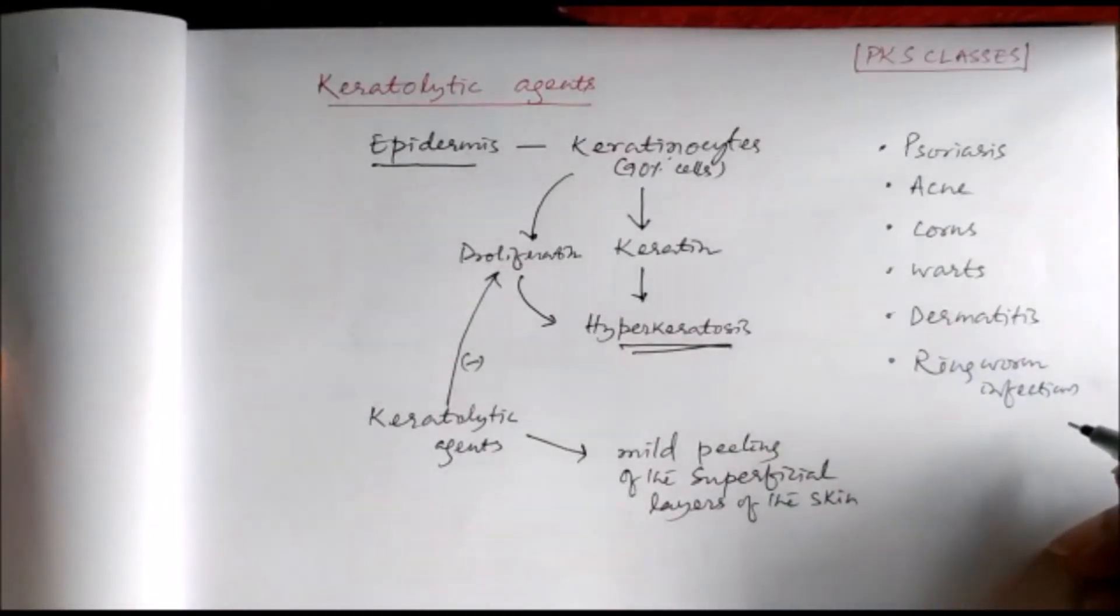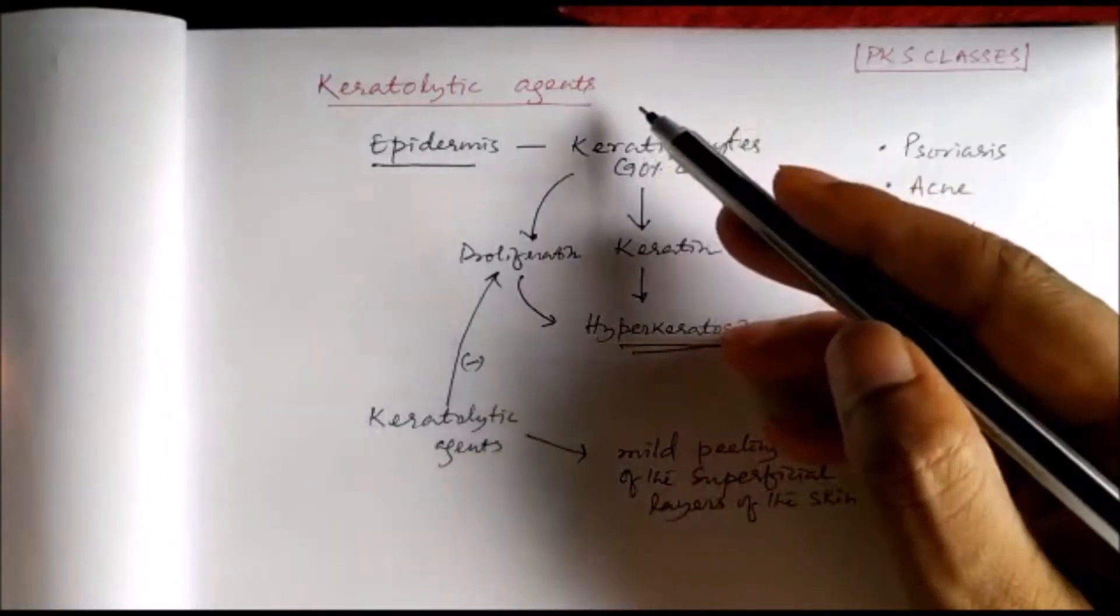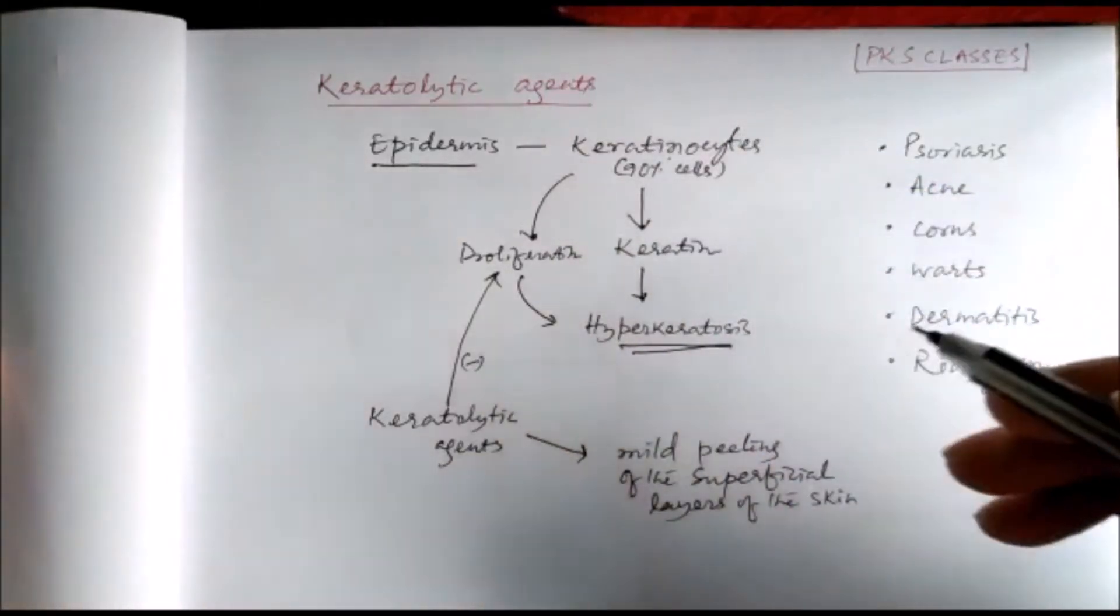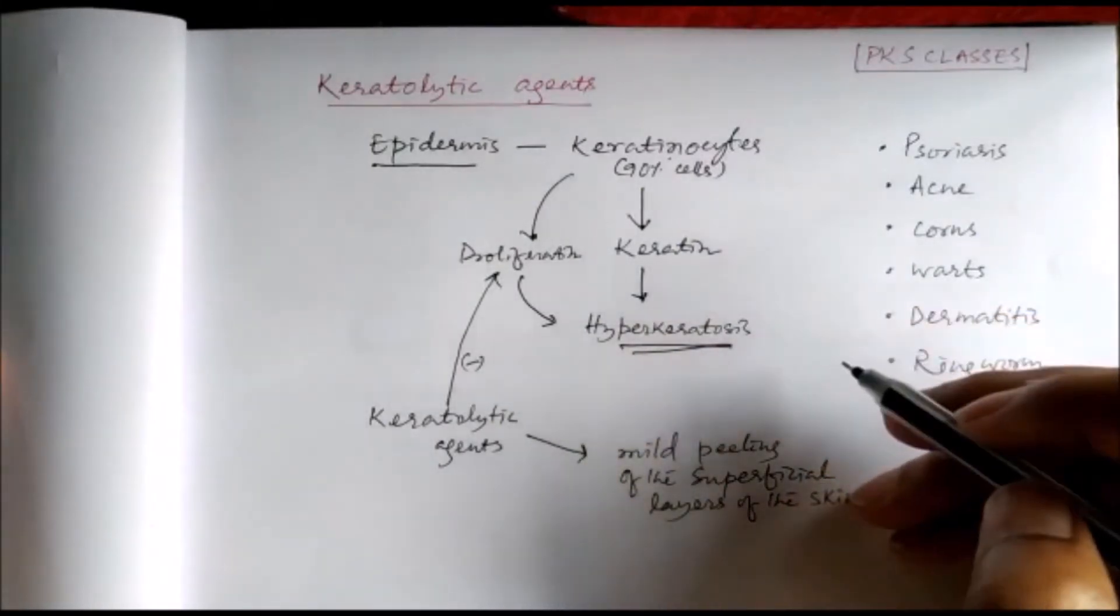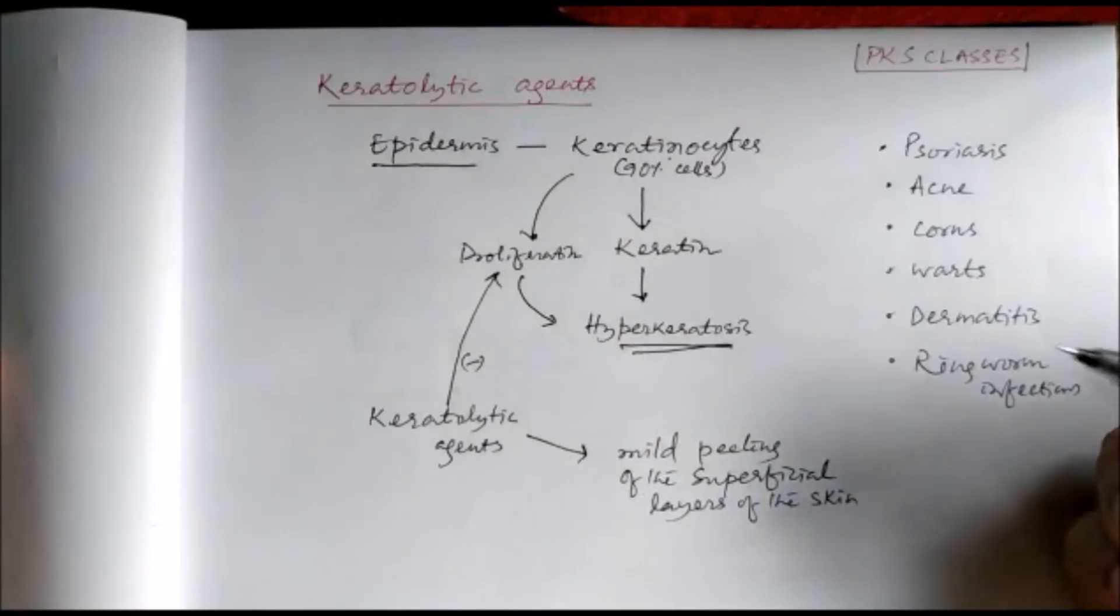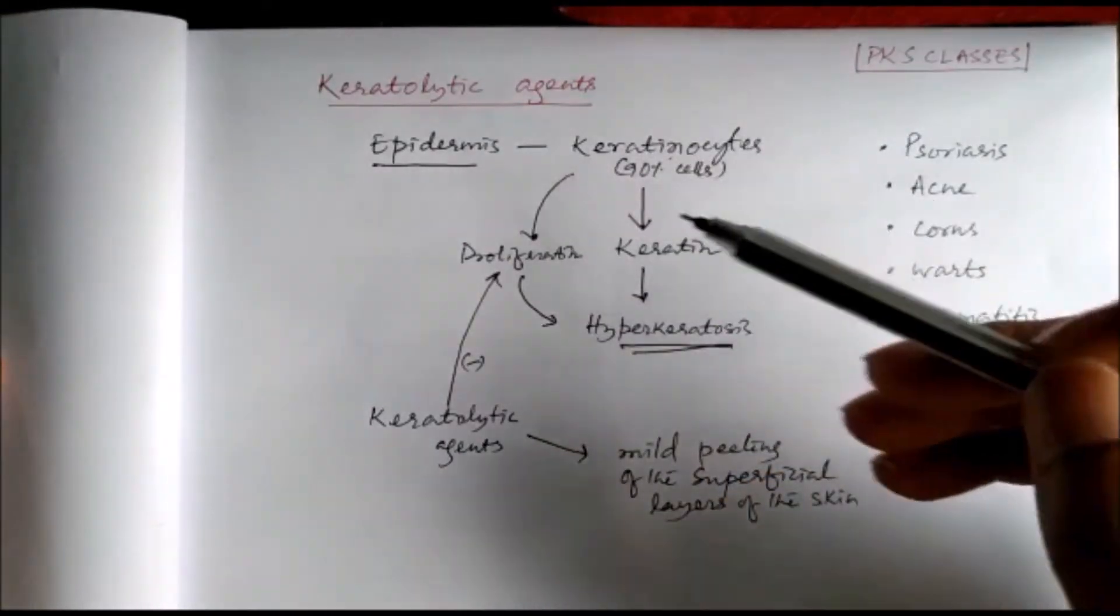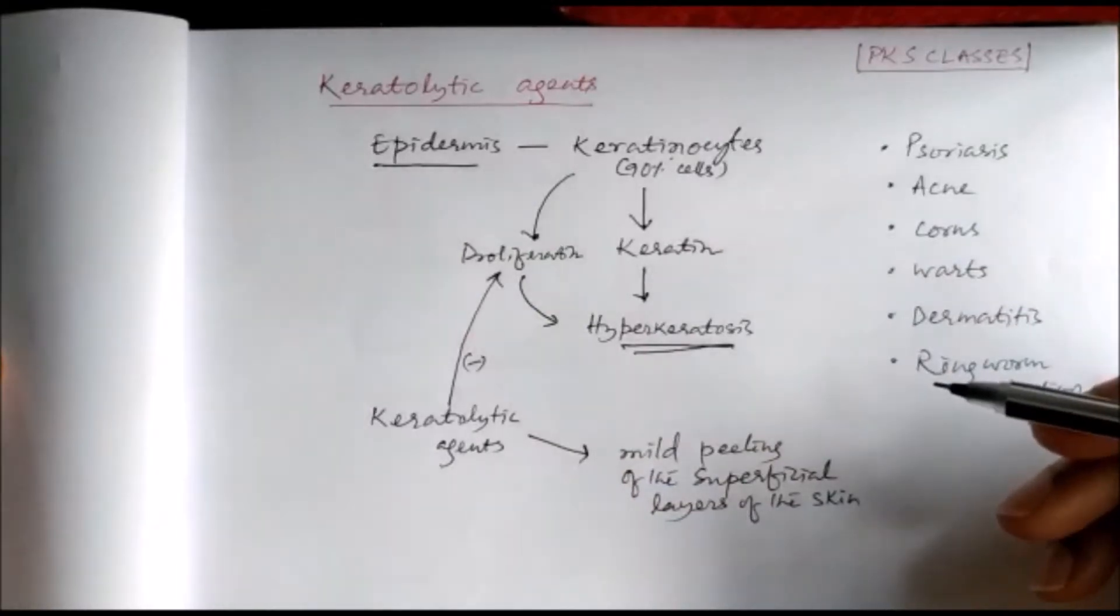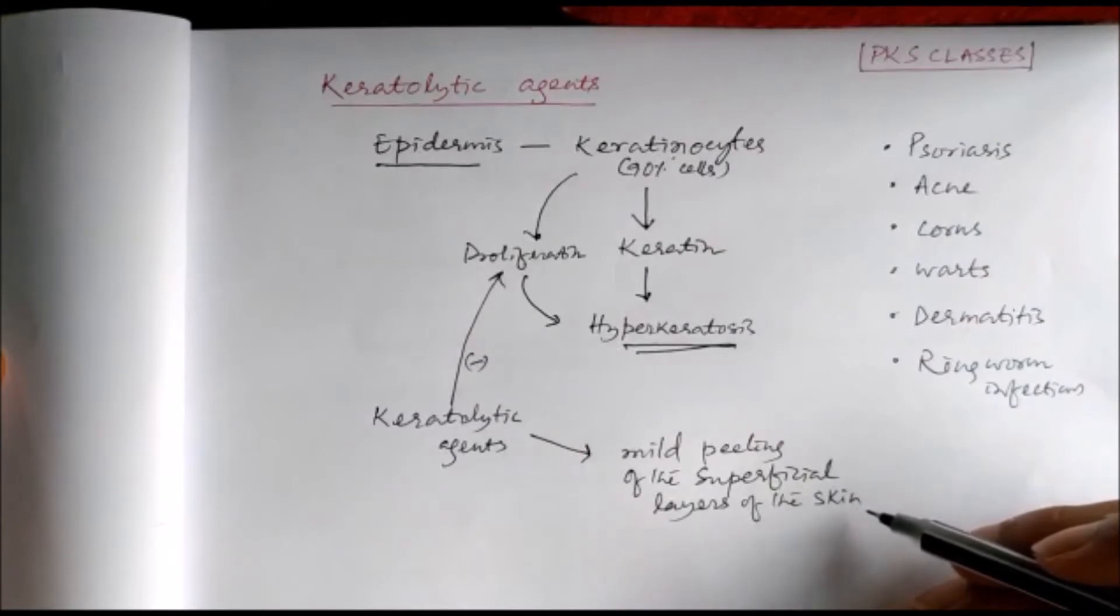These keratolytic agents actually remove this keratin or decrease the keratin by two ways: number one, by inhibiting the proliferation of keratinocytes, or by mild peeling of the superficial layers of the skin.